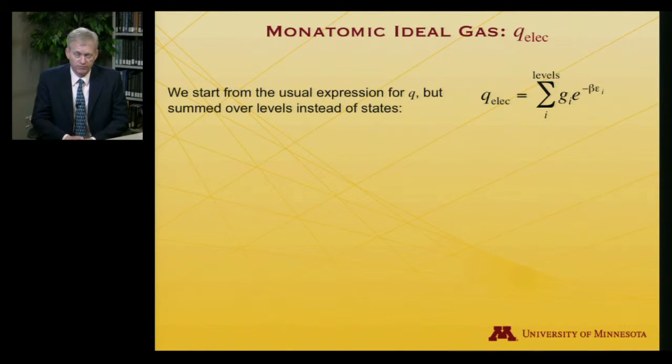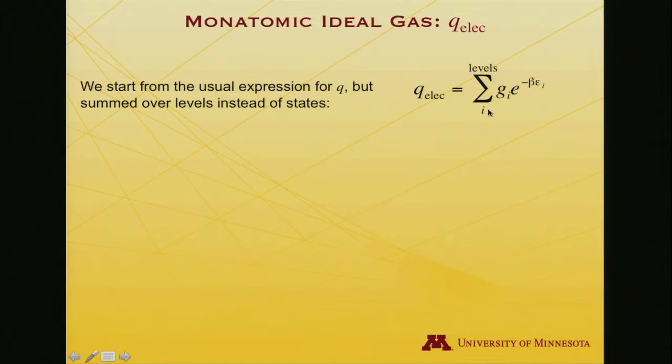We'll start with the usual expression for a partition function, but in this case, I want to sum over levels as opposed to states, and that's dictated by the degeneracies that may arise in electronic energy levels. In that case, I'll have the electronic partition function, a sum over levels, the degeneracy of the level, e to the minus beta, the energy of that level. So epsilon being used to indicate the energy, as always, and g to indicate the degeneracy.